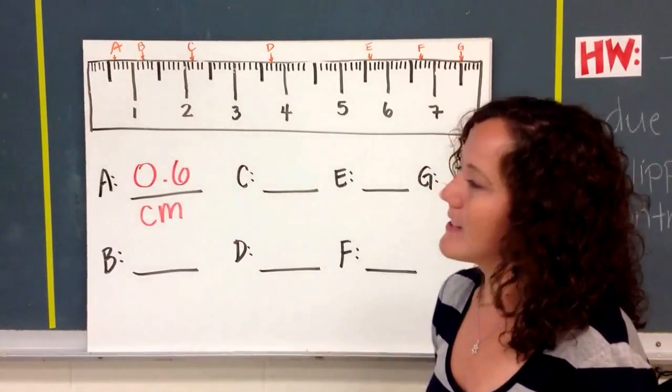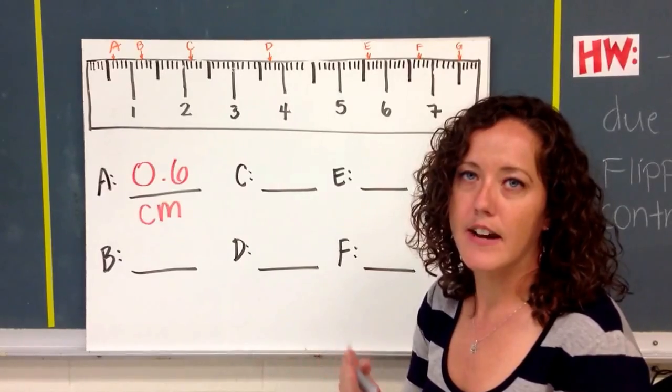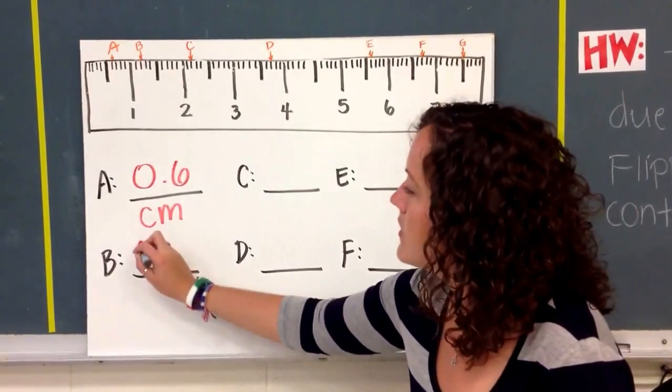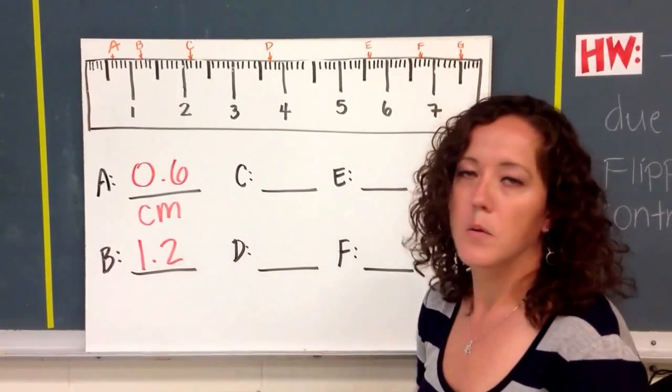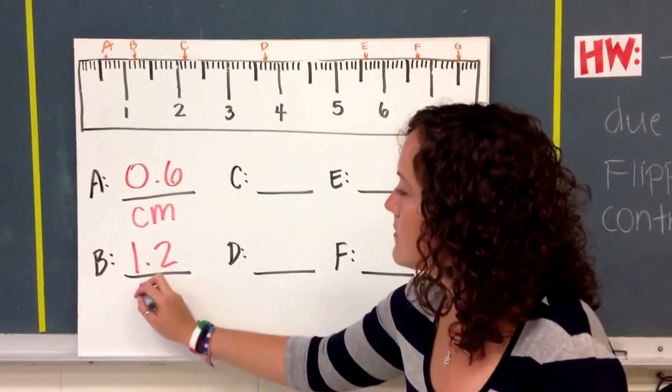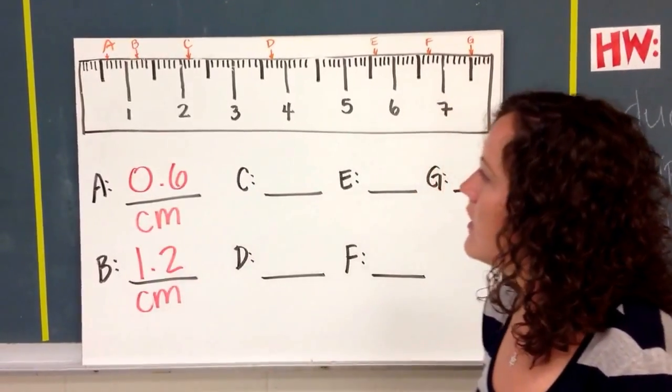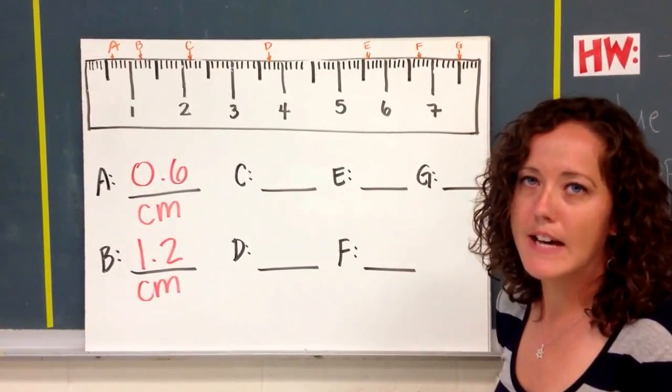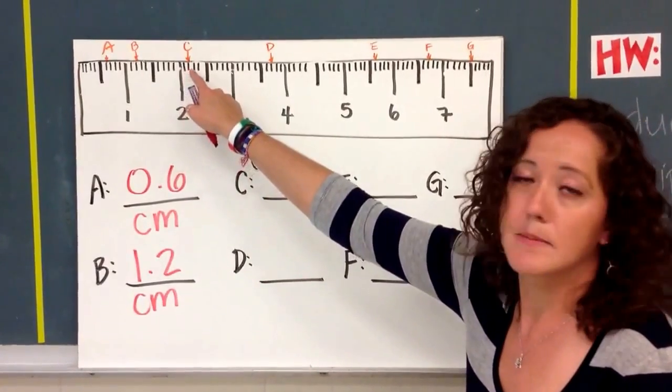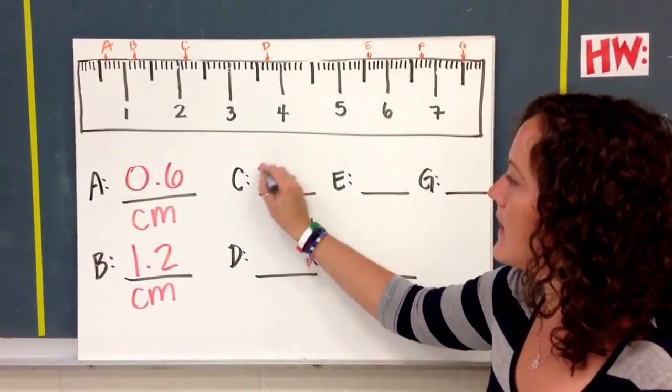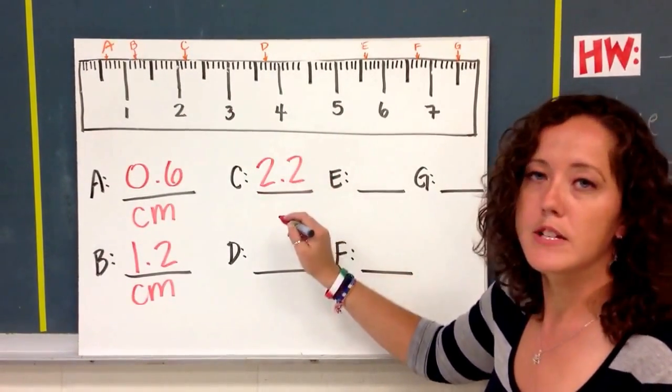Look at letter B. This one is just past the 1, and so you count how many lines are after 1. And there are 2, which gives us 1 and 2 tenths of a centimeter. Letter C is a little further out. This one is past the 2, and there are 2 lines past the 2, which means that we will write down 2.2 centimeters.